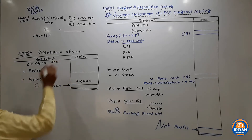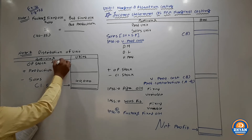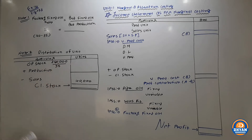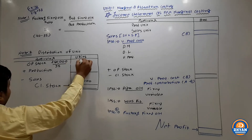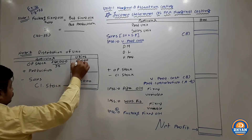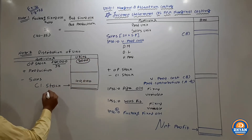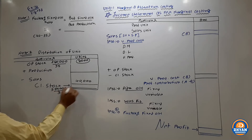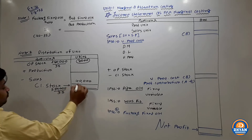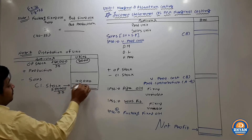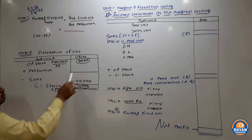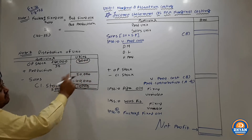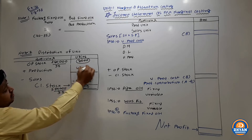For opening stock: the marginal statement shows opening stock value of Rs. 2,80,000. Divide by the marginal cost per unit of Rs. 35, and you get 8,000 units. Similarly for closing stock: value is Rs. 3,50,000. Divide by 35 to get 10,000 units. So we have: sales 40,000, closing stock 10,000 — adding the difference gives production of 42,000 units.